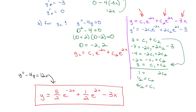Okay, it's your turn to practice some of these. We're practicing with vocabulary, Wronskians, linear independence, and finding the general solution y = y_c + y_p. Take a look at practicing these, let me know if you have any questions, and we'll see you in class. Thanks for joining us.